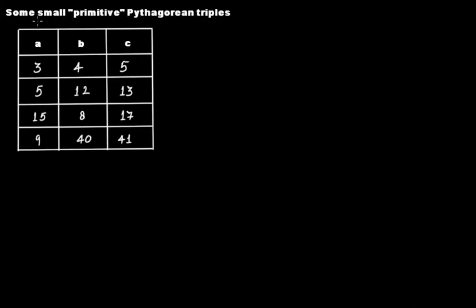Now let's look at this table of some small primitive Pythagorean triples. We have discussed Pythagorean triples, but what do we mean by the term 'primitive'? That's what we have to discuss here.